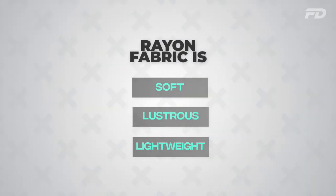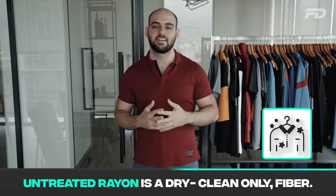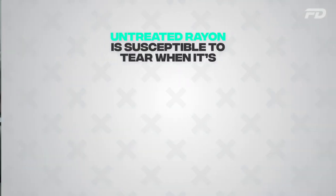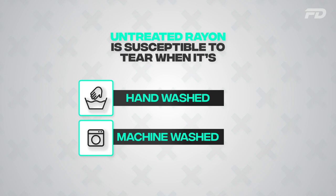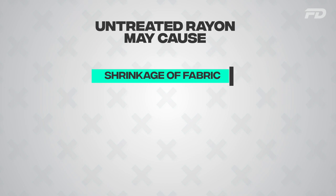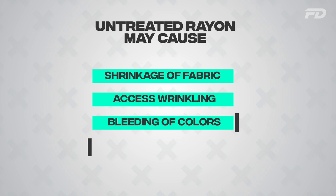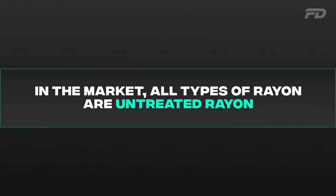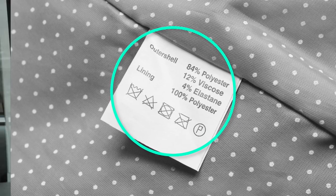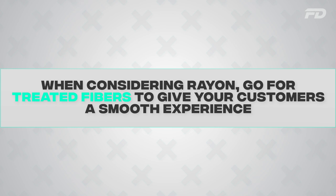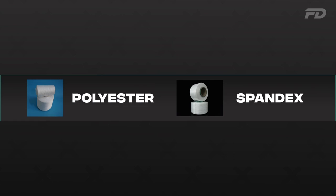Because of its primitive production methods, non-treated rayon is considered a dry-clean-only fiber. It's very susceptible to the added wear and tear of hand washing or machine washing, which breaks down the fibers and leads to shrinkage, excess wrinkling, bleeding of colors, and overall breakdown of the fiber. Most rayon on the market is untreated; treated fibers that can be machine washed are considerably more expensive. I highly recommend going with treated fibers for added customer convenience. Another method is combining rayon with other fibers like polyester and spandex to bring in more durability, water resistance, and stretch resistance.